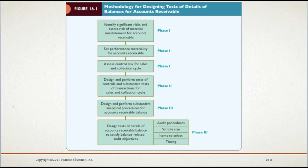Here we have a summary of the methodology for designing tests of details of balances for accounts receivable as it relates directly to the evidence planning worksheet discussed in Chapter 9. The worksheet was partially completed for Phase 1 and Phase 2 in Chapters 9 and 15. In this chapter, the worksheet will continue to be completed as we discuss Phase 3 of the methodology. You can find Figure 16-1 on page 525 of your textbook.